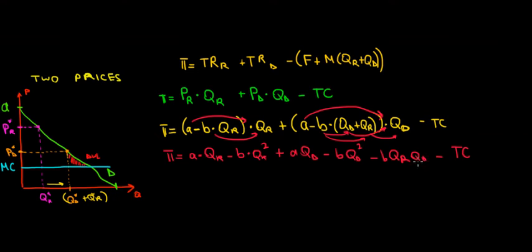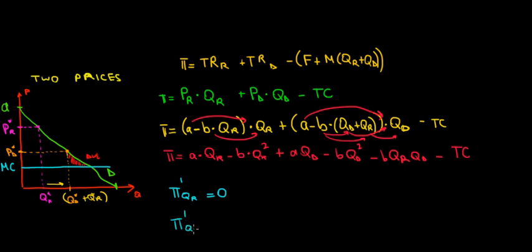To find the maximizing prices, we first differentiate the profit function with respect to QR, the quantity sold to regular customers, set it equal to zero, and then differentiate with respect to QD, the quantity sold to discount customers, and set that equal to zero as well. We solve this as a system because we care about both quantities simultaneously. We'll continue solving in the next video.